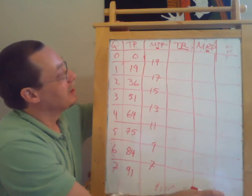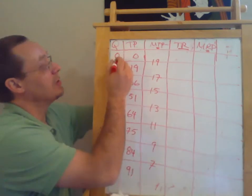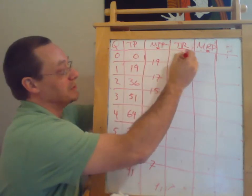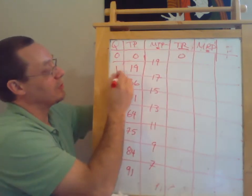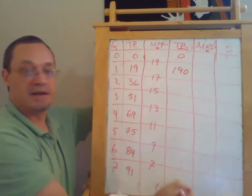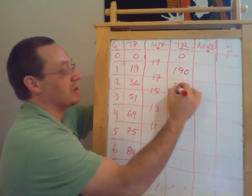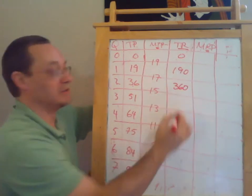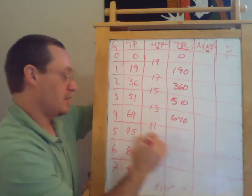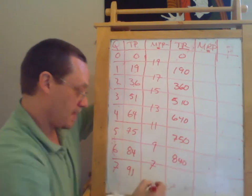So let's say that each unit of output sells for 10 bucks. So if we hire zero workers and produce zero, our total revenue is, of course, zero. If we hire one worker and produce 19 units, our total revenue is 190. If we hire two workers and produce 36 units, our total revenue would be 360 and so on and so forth. So 510 and 640 and 750, 840 and 910.